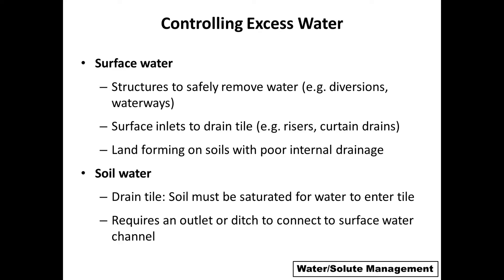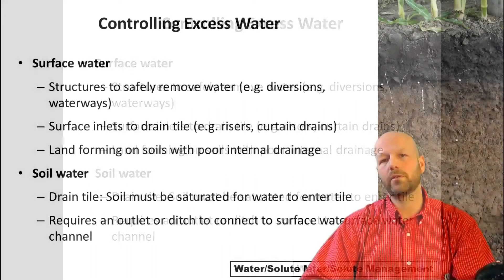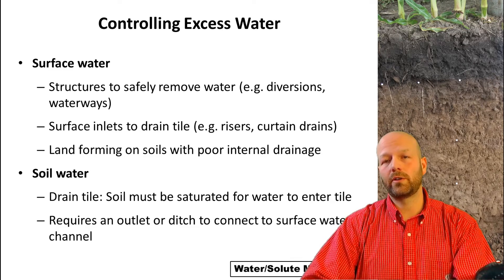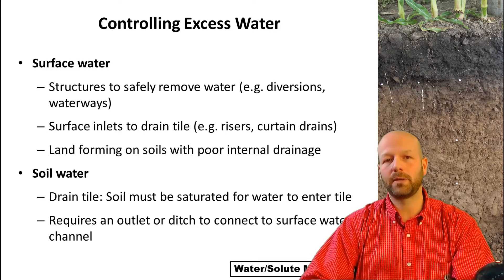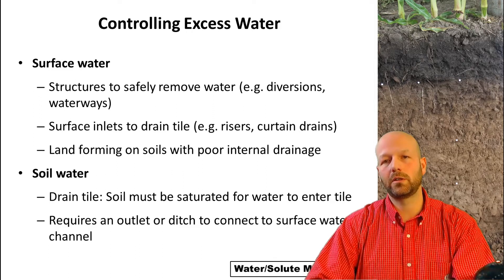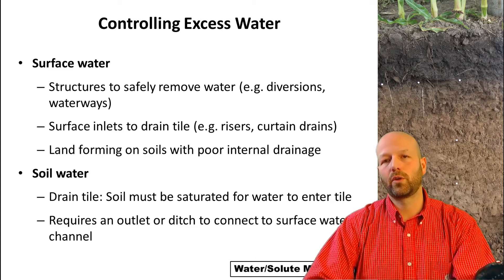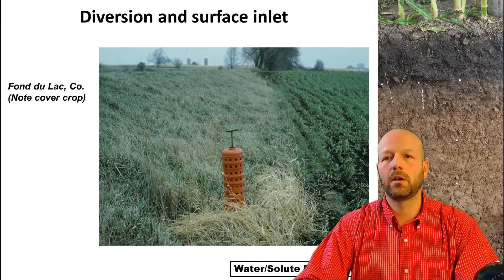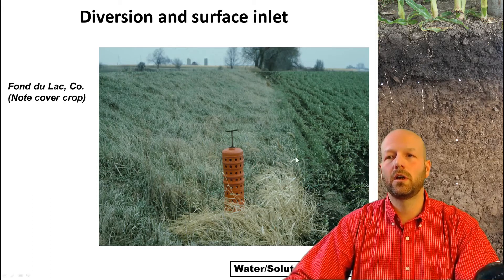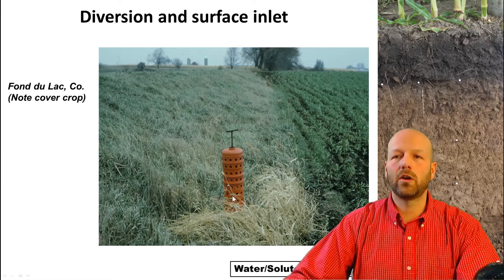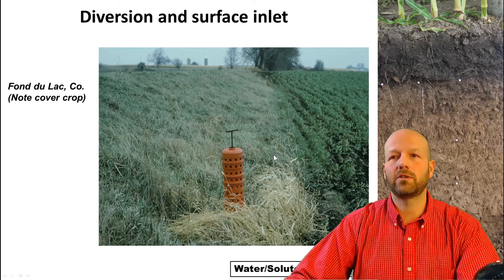When looking at excess water in the profile, one of the number one practices here in the state is the use of drain tiles, which can be quite effective. It's also very effective at reducing erosion because you're removing the amount of water in the soil and reducing saturation. One concern is that you require an outlet or a ditch to connect to a surface water channel — an area of confluence — so you can safely drain that water out of the field. Here's an example of a diversion surface inlet — it's just a pipe with different holes. If you had excess water in a region, that water instead of standing there or running off and causing concentrated flow and gully erosion can go through this pipe into a tile and be safely discharged out of the field.